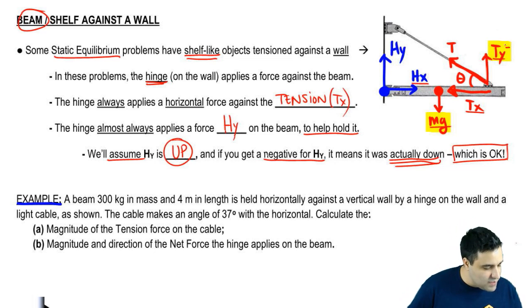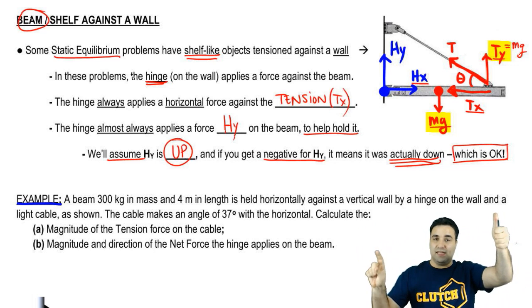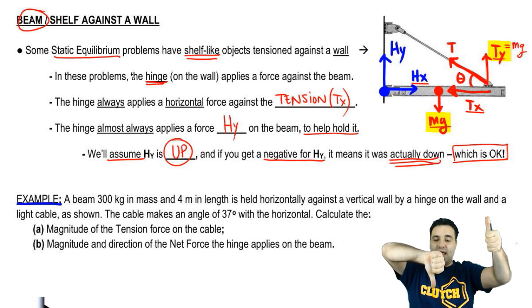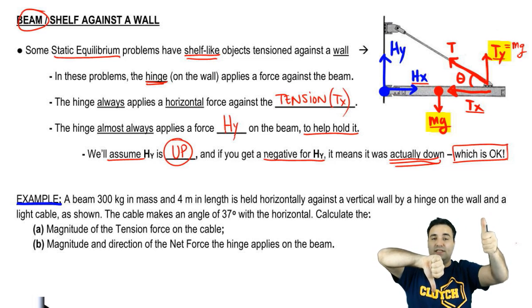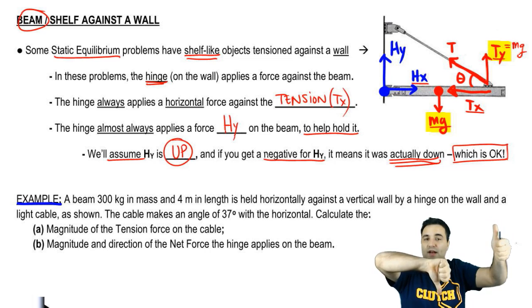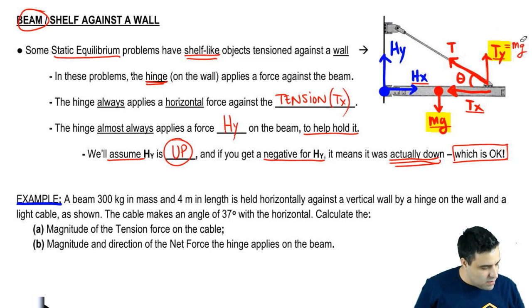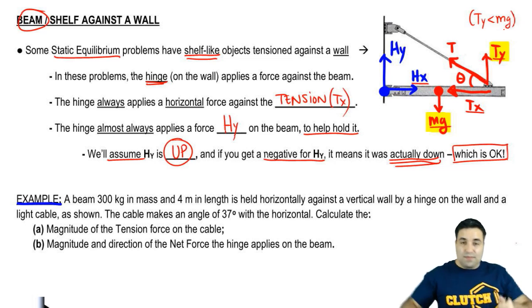You don't need to really understand this to solve the question, but I just want to talk about this very briefly. You have to have a Tx so that you cancel with an Hx. That's easy. But why do you need a Ty if you already have a force canceling Mg? Why do you need an Hy rather? Well, let's say if you didn't have an Hy, then Ty would have to equal Mg so that the forces canceled. The problem is Ty is farther from the axis at the hinge than Mg is.